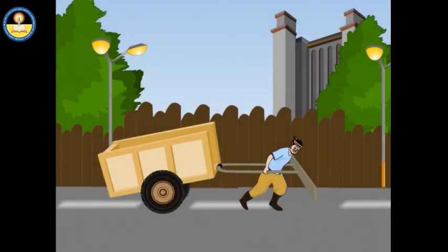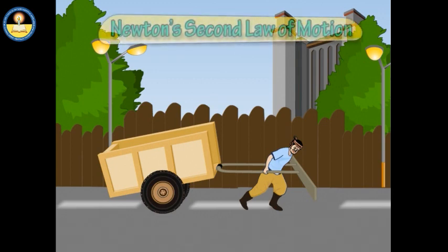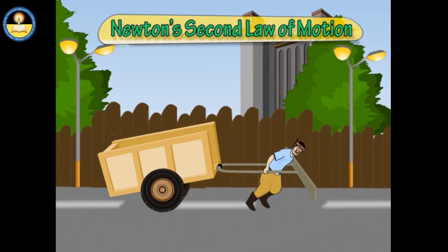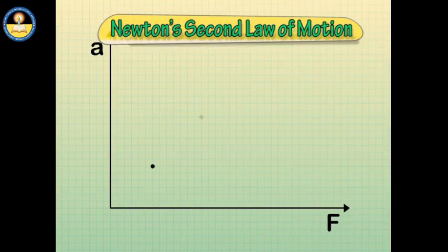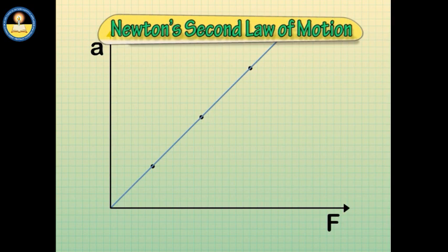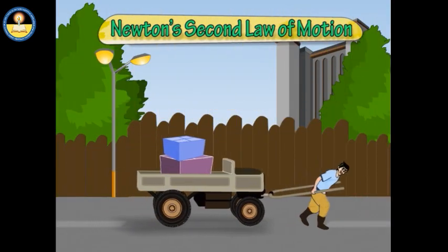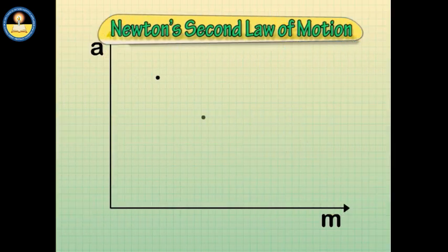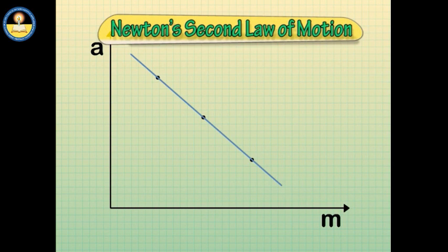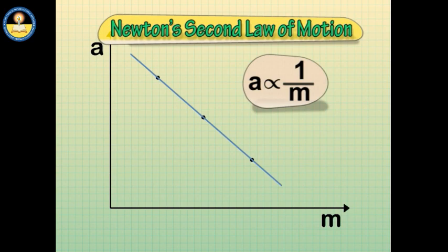Newton's first law tells us about force and its effects; Newton's second law tells us about the magnitude of force. When we pull a body gently, a small acceleration is produced; pulling harder produces more acceleration. A graph between acceleration and force is a straight line with a positive slope, showing acceleration is directly proportional to force. When the same force is applied to unequal masses, increasing mass decreases acceleration — the graph between acceleration and mass is a straight line with a negative slope, showing acceleration is inversely proportional to mass.